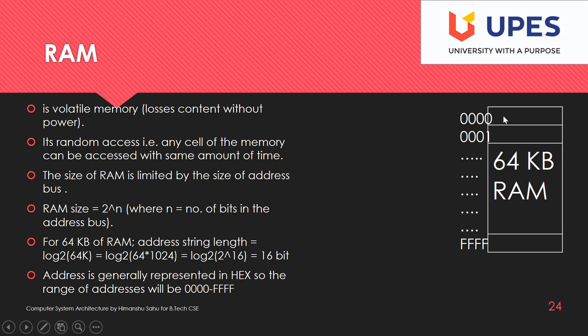RAM is random access, meaning any cell of the memory can be accessed with the same amount of time. Out of approximately 64,000 memory locations, you can access any memory location with the same amount of time.